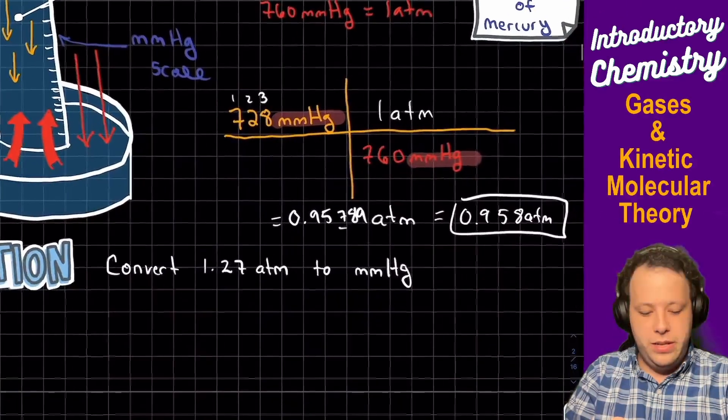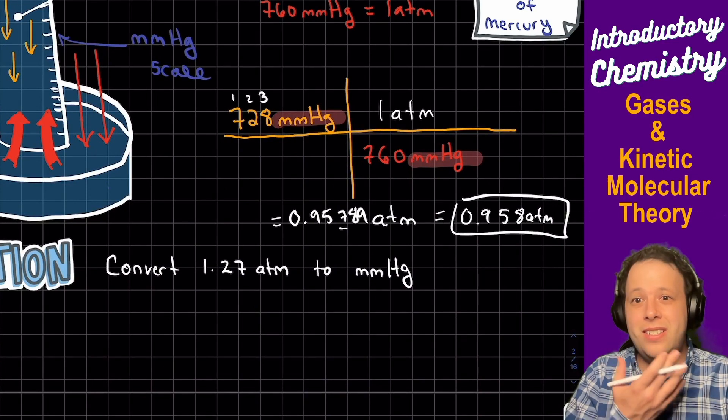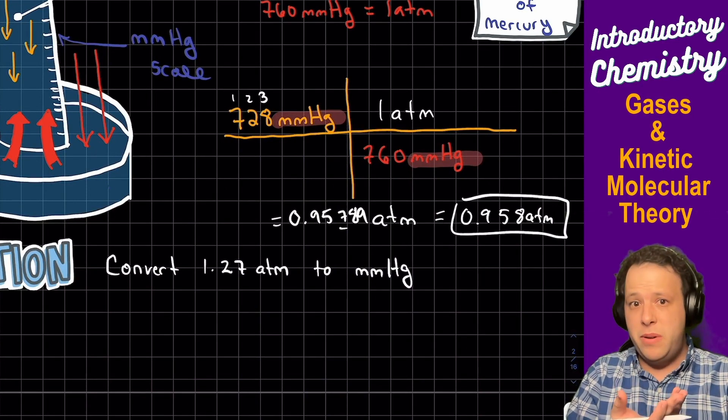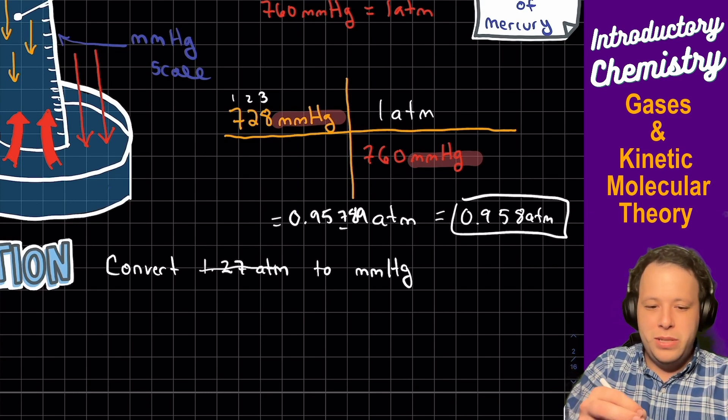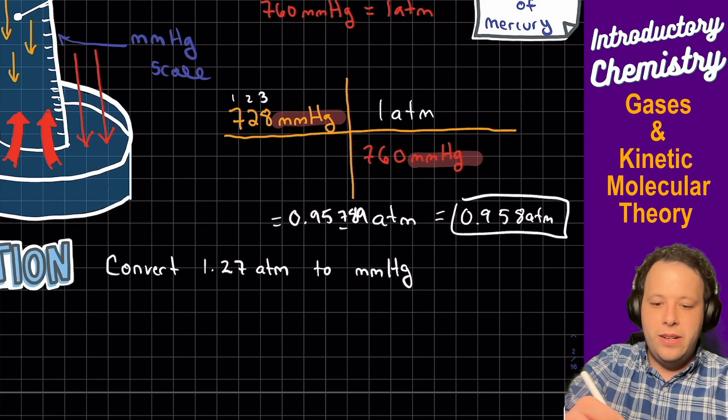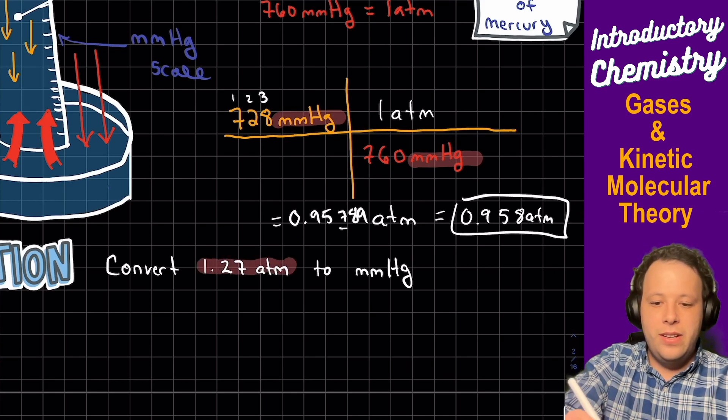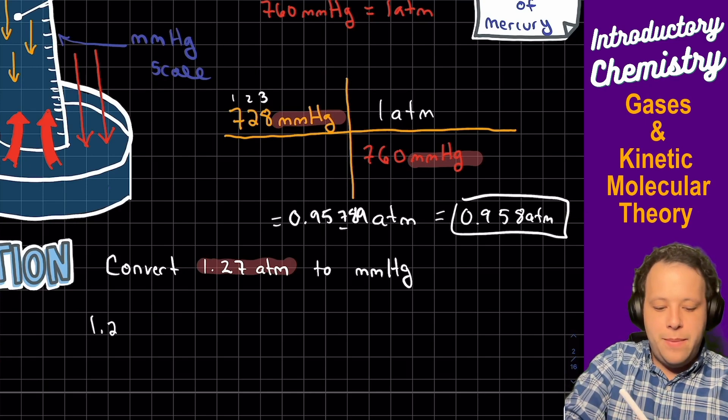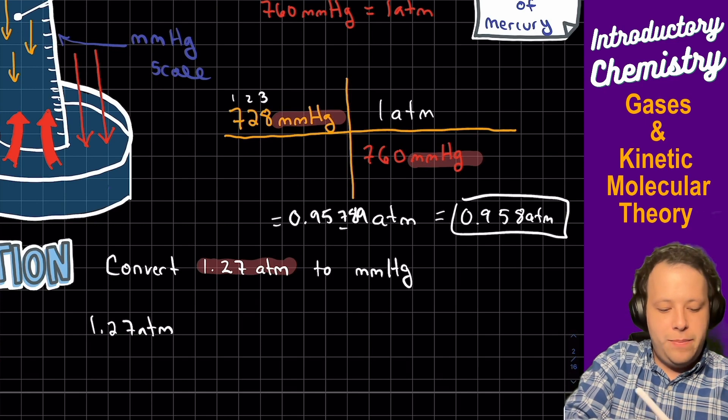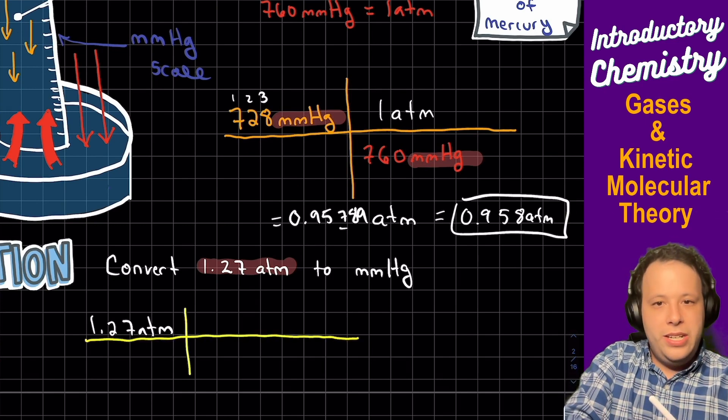That's how you convert. Let's do it one more time for ourselves. So if I want to convert 1.27 atmospheres to millimeters of mercury, how would I do that? Well, once again we're going to illustrate the important piece of information right? We see that we have the 1.27 atmospheres, and we're going to set that up as well in a table for ourselves.